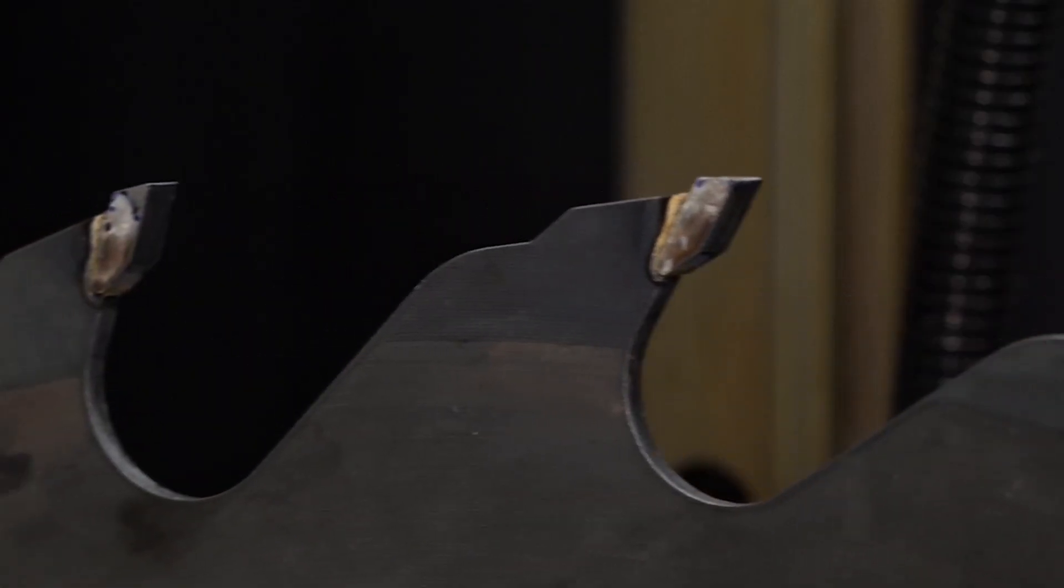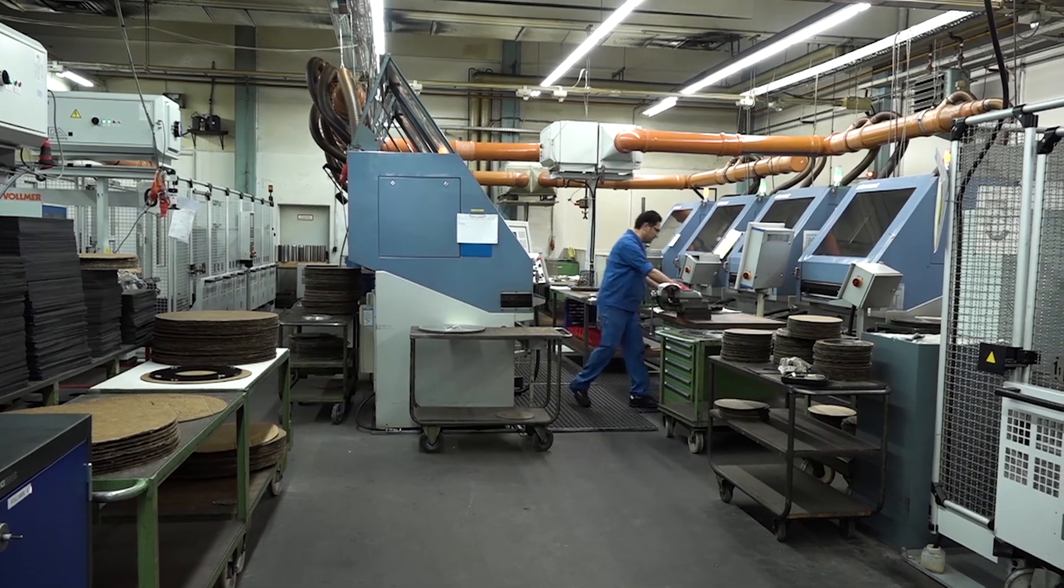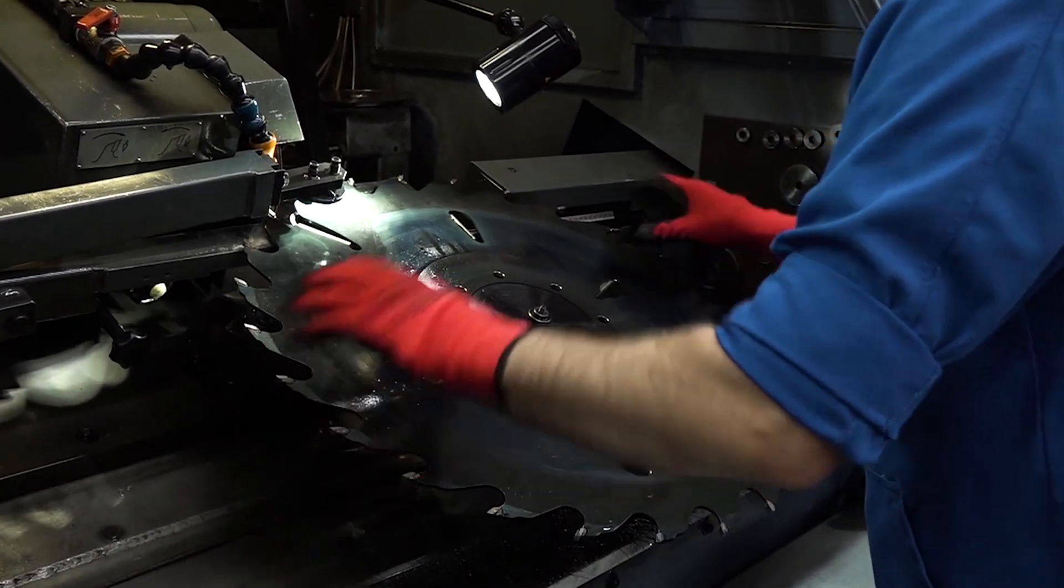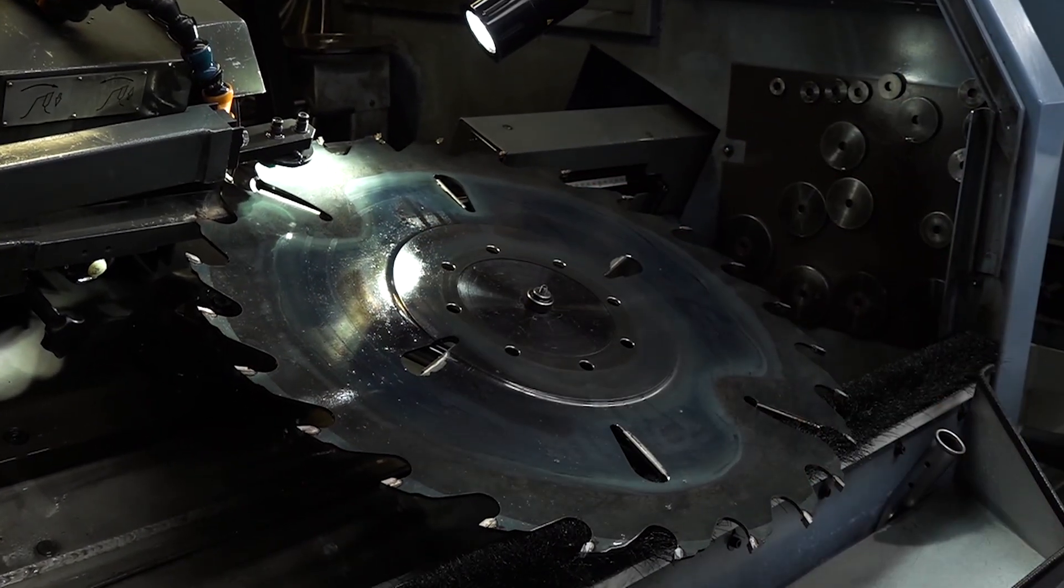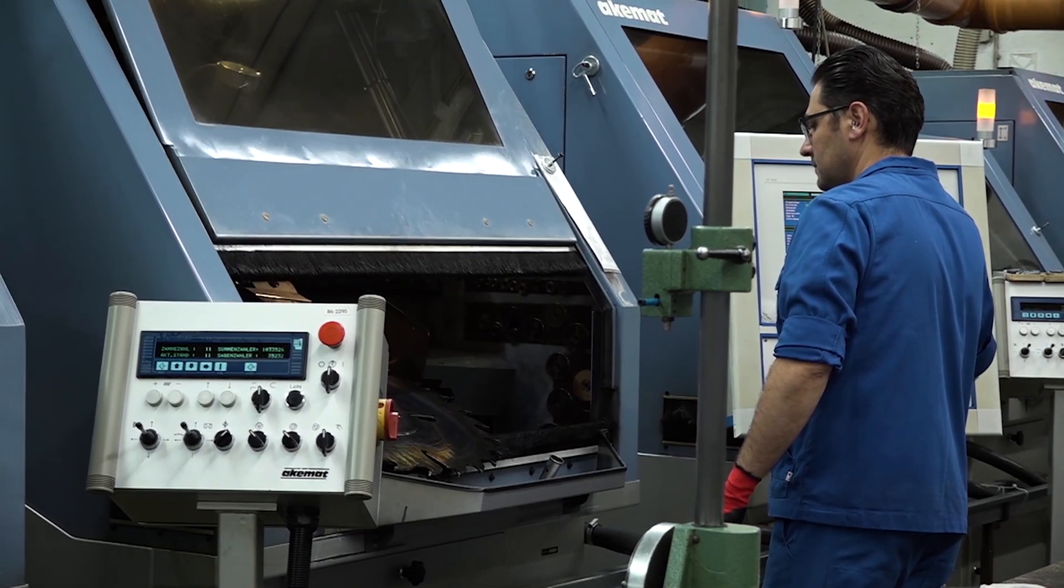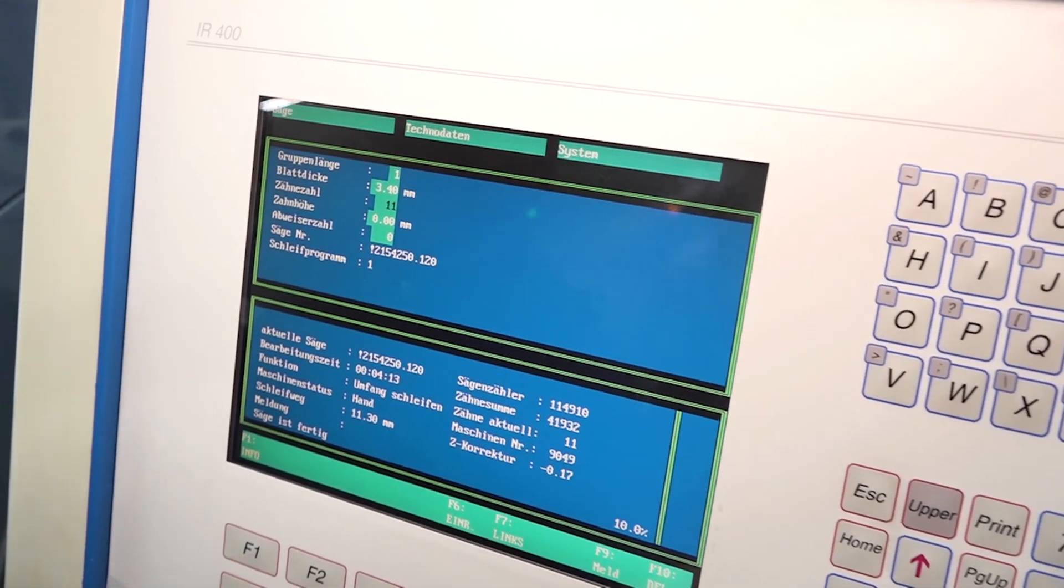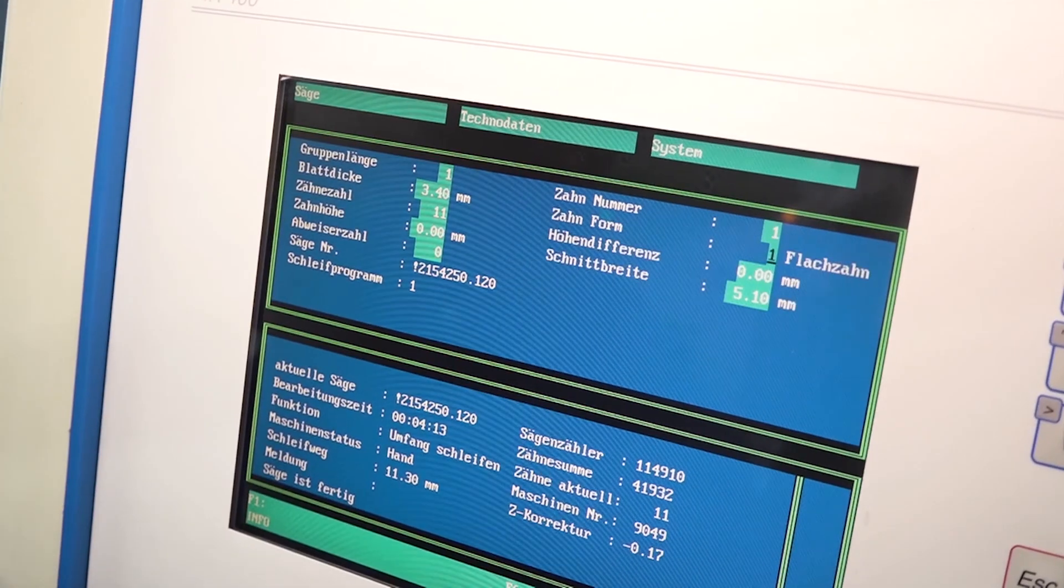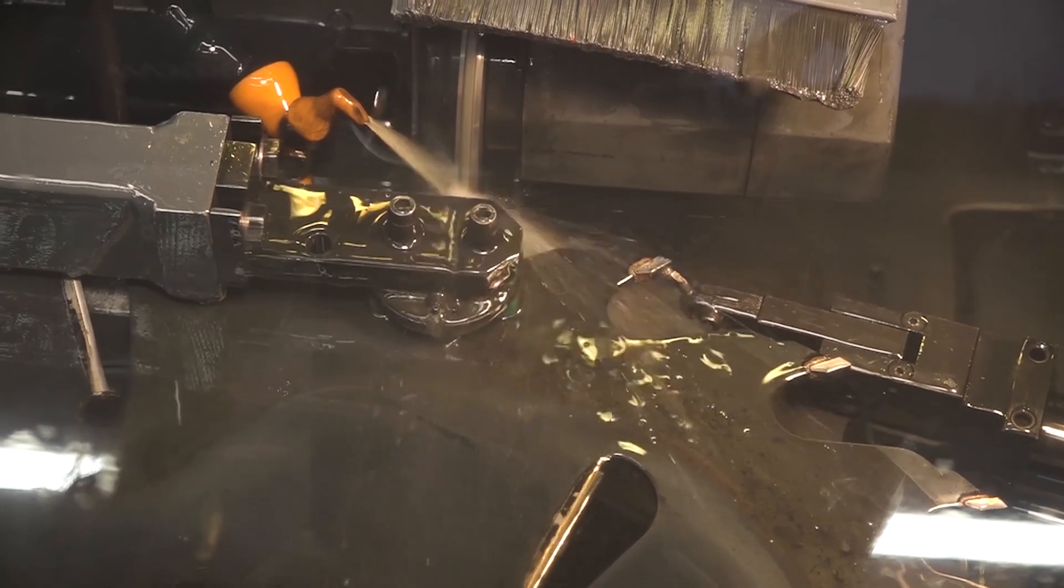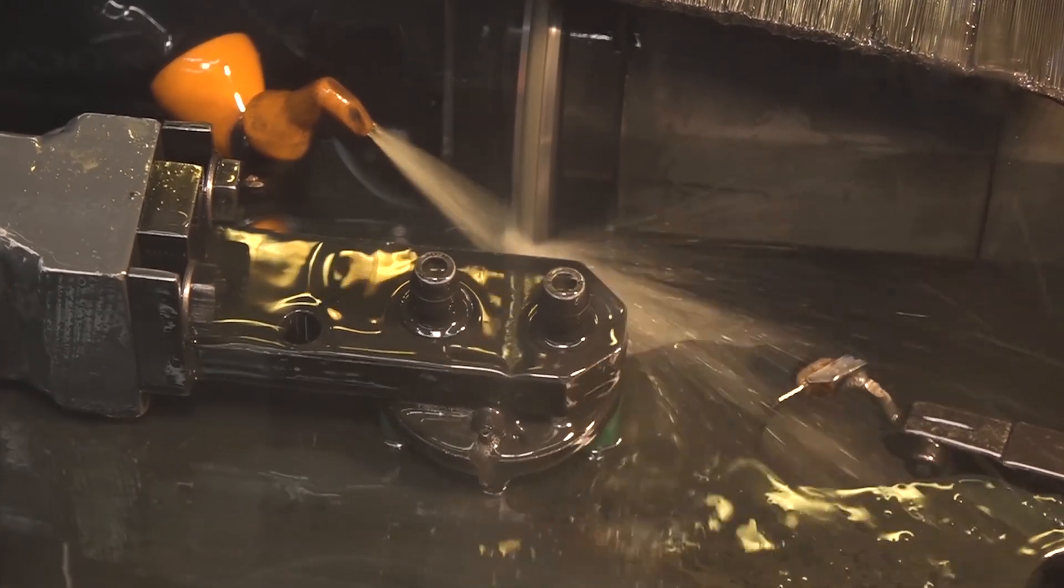In the next processing step, the teeth are sharpened and given their final shape. AKE does not rely on off-the-shelf machines for sharpening. An in-house machine shop has been manufacturing grinding machines to the special requirements of AKE engineers for over 40 years. Resilient diamond grinding discs are used on the specially developed AKE grinding machines.